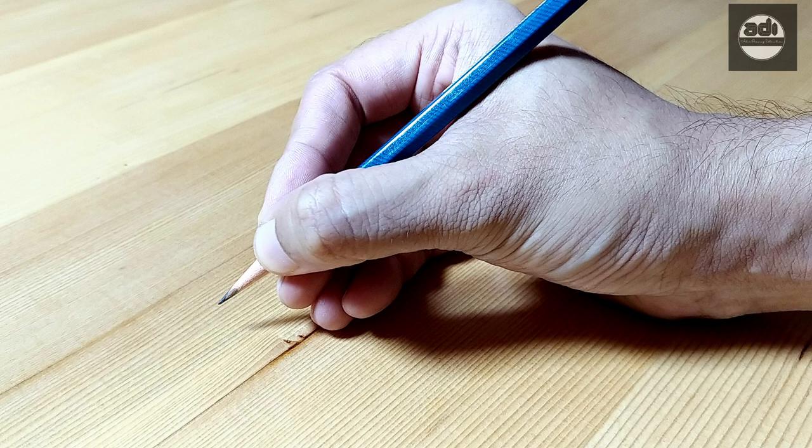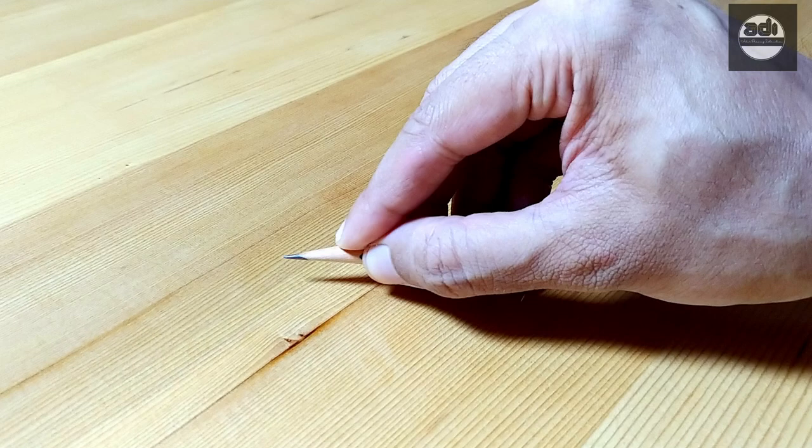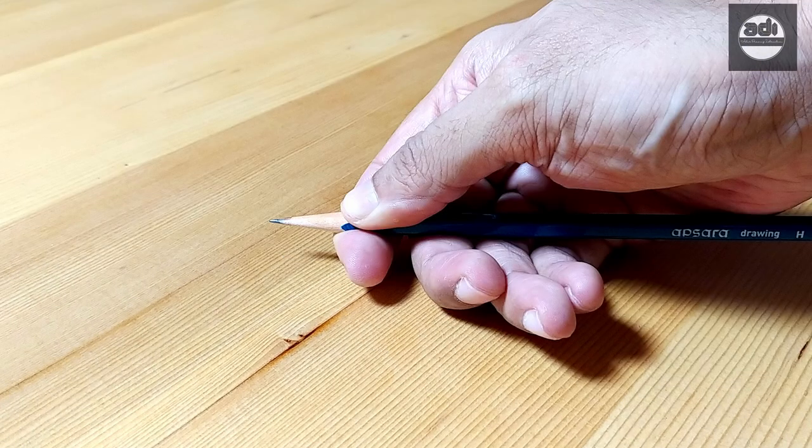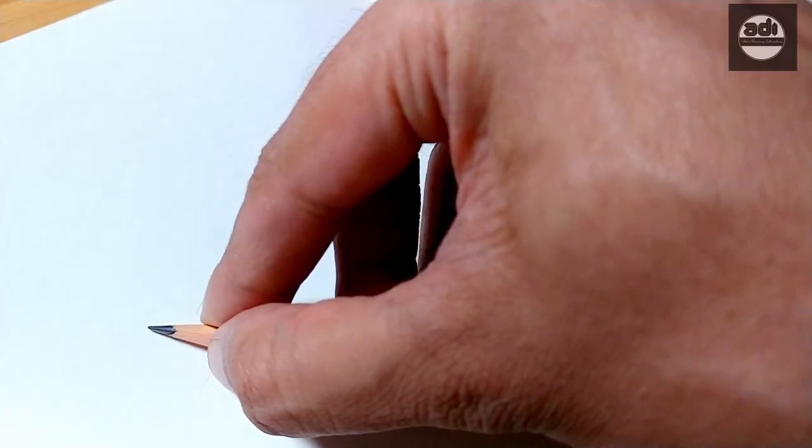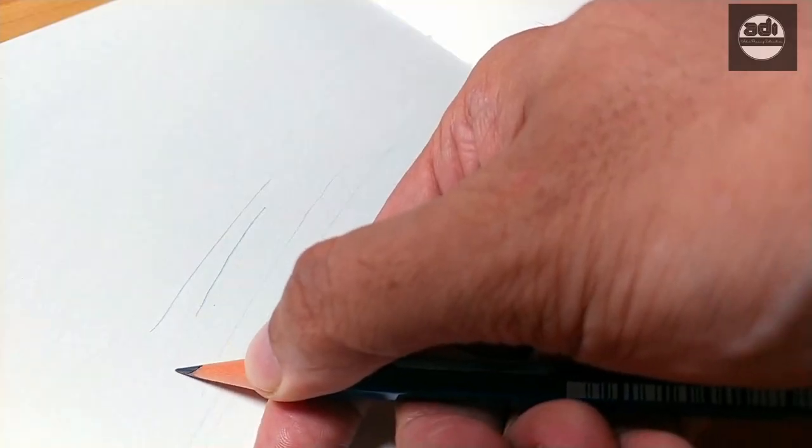For each grip there are two ways of holding the pencil. One, close to the point. Close to the point you get more control but you tend to exert more pressure on the point, hence making darker marks.